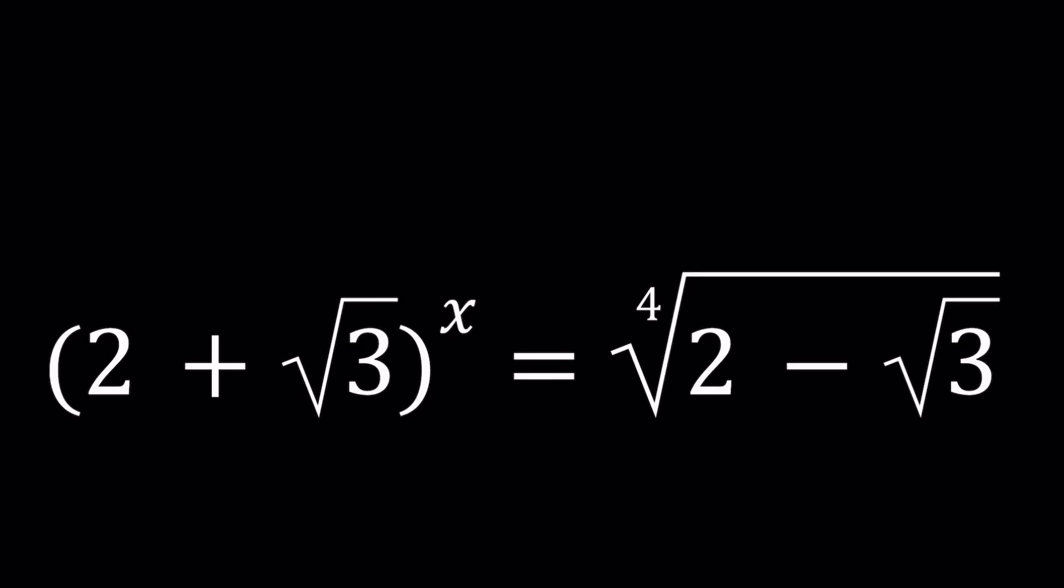Hello everyone. In this video, we're going to be solving an interesting exponential equation. Why do I call this equation interesting? Because we have a radical on the left hand side, an irrational number like 2 plus root 3, and on the right hand side we have another radical, which is the fourth root of another radical, and we're looking for x.